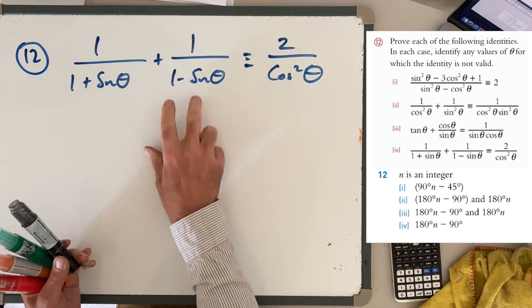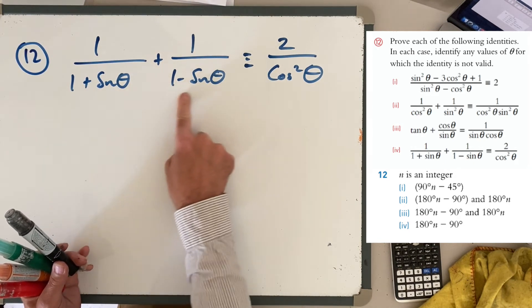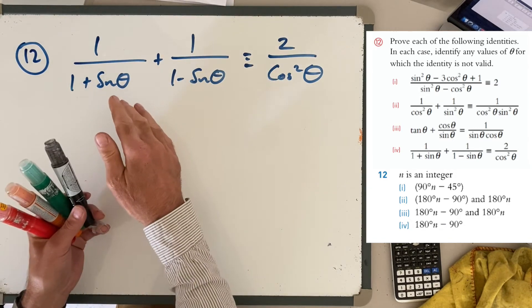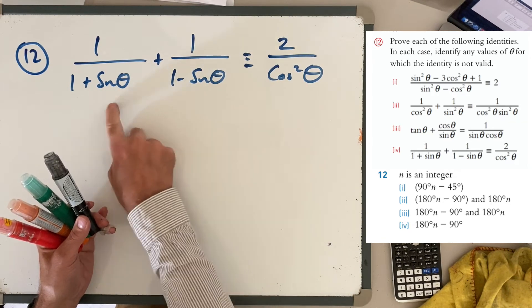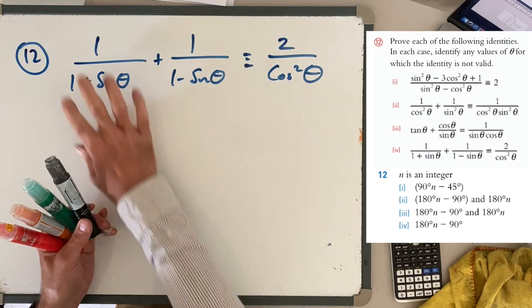This looks like it's going to be a bit more of a fun challenge, but again, I'm seeing a difference of squares. Yeah, I kind of am. Let's multiply this together. Let's put it over one fraction, because I can see something happening here, and I'm going to get 1 - sin² θ at the bottom, which is cos² θ. So yeah, that's how it works.